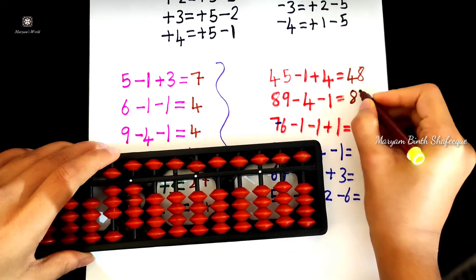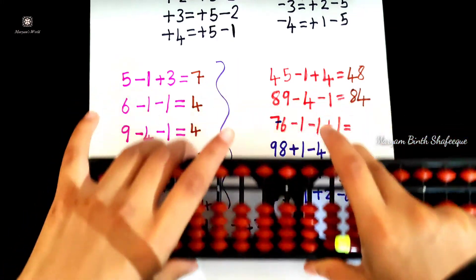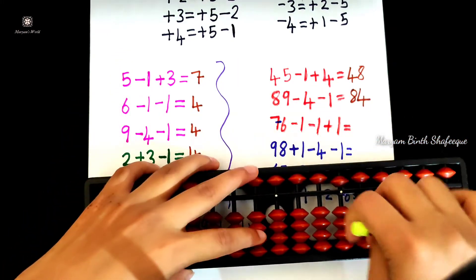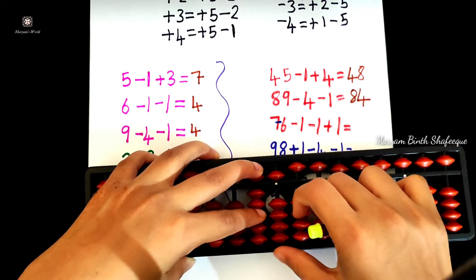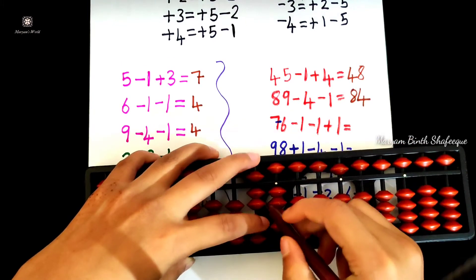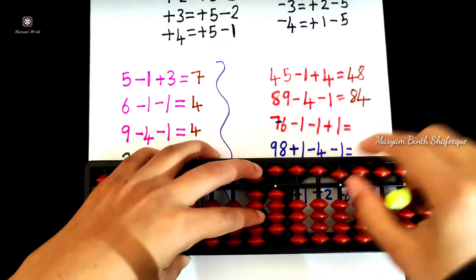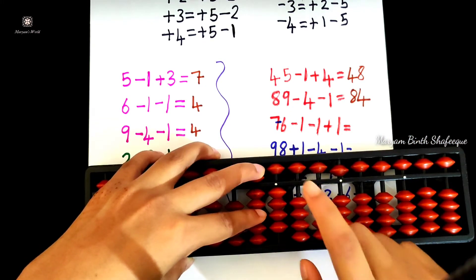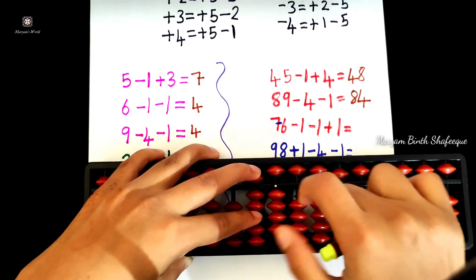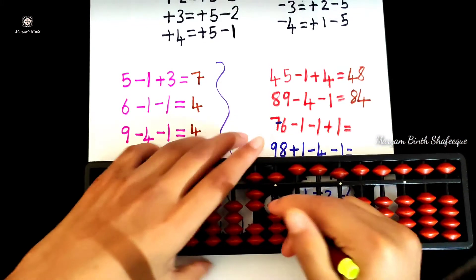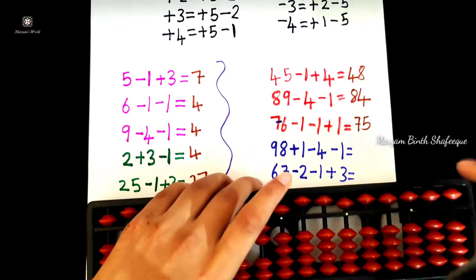Next: 76 minus 1, again minus 1. Minus 1 equals plus 4, minus 5. 74 is equal to plus 1. Plus 1 equals — we will apply the formula — plus 1 equals plus 5 minus 4. Now 75 is equal to plus 1. Next.